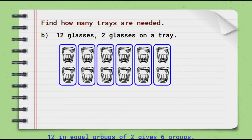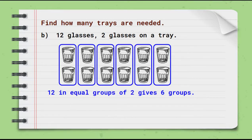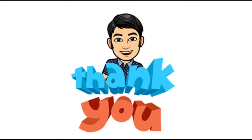Then we can say 12 in equal groups of 2 gives 6 groups. 12 divided by 2 equals 6. Therefore, 6 trays are needed. Thank you for watching.